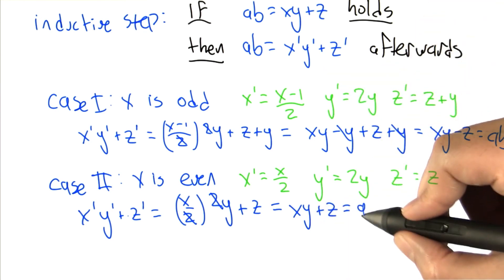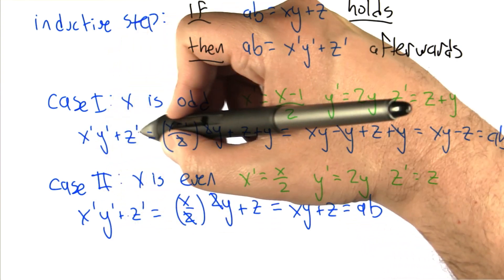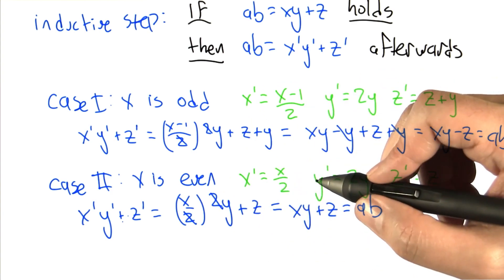which we had assumed coming into this is equal to a times b. So the new values of x, y, and z in either the case where x is odd or x is even continue to satisfy this property.